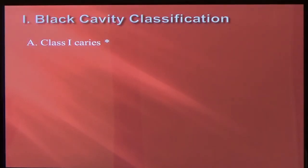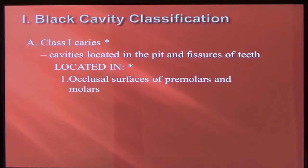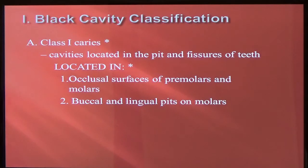Class 1 caries — you need to know all of these: class 1, 2, 3, 4, 5, and 6. Class 1 caries are cavities that are located in the pit fissures of teeth. They're located in occlusal surfaces of premolars and molars. Occlusal surfaces are the biting surfaces of the back teeth. Buccal and lingual pits — on the cheek side or the tongue side, there's a little pit where you can have class 1 cavities.